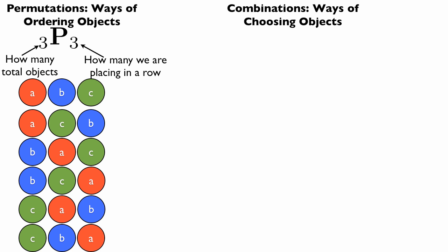In the last video we discussed permutations, which are ways of ordering a group of objects. The first number in the notation is how many objects you start from—we start from three objects—and the second number is how many we're going to place in a row.